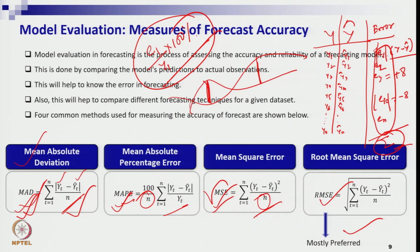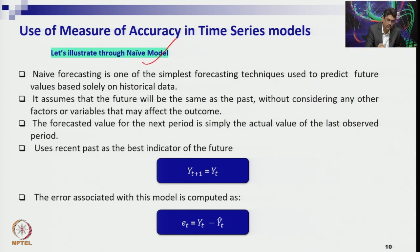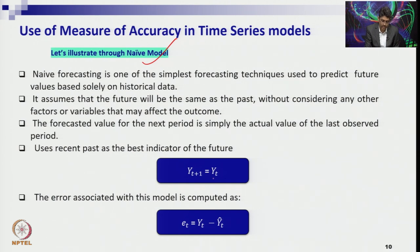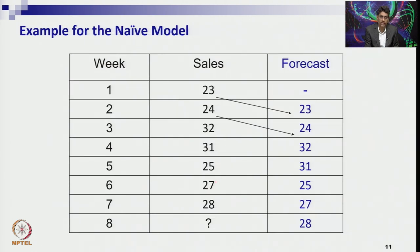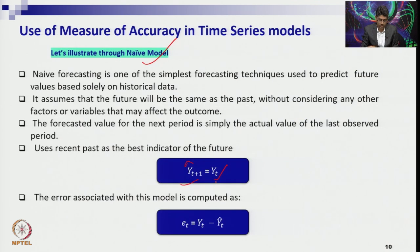Let us understand these four concepts — MAD, MAPE, MSE, RMSE — through a numerical example using the Naïve model. The Naïve model is the basic model: whatever the immediate past period value is, that becomes your forecast for the next day. No calculation, no average, no seasonality — just the past data as the forecast.